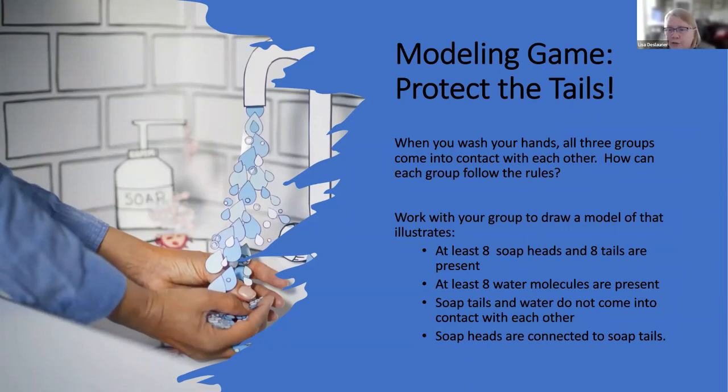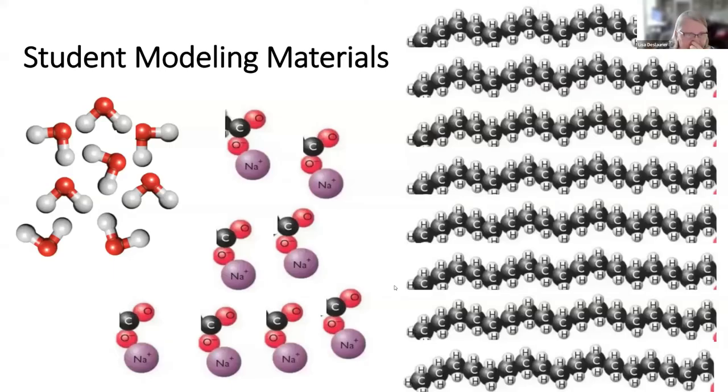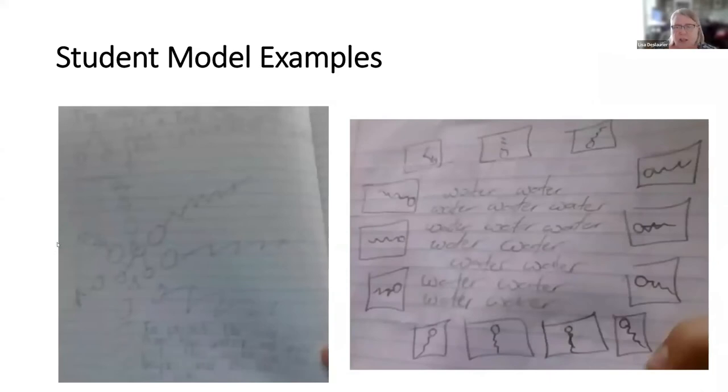If you're water, you cannot stand next to a soap tail, but you have no problem being next to a soap head. If you're a soap head, you can interact with any other molecule, but you also help keep the soap tails away from the water. And if you're a soap tail, you have to stay away from water, but you have to stay attached to a soap head, because that's how it works. And so you can either have the kids line up and make a human model, which I've done, or you can work with the group to have them draw a model. Or the next slide, I have an example of how you can cut out pieces of all these things, but they have to follow the rules to make a model of how they think this works. That you have to have at least eight soap heads and eight soap tails and eight water molecules, and the soap tails and the water cannot come into contact with each other, and the soap heads have to stay attached to the soap tails.